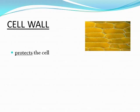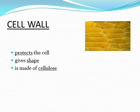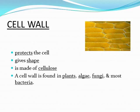The cell wall is present only in plant cells. Its basic function is to protect and give shape to the cell, and it is made up of cellulose.